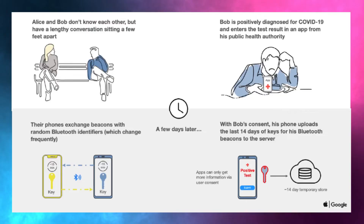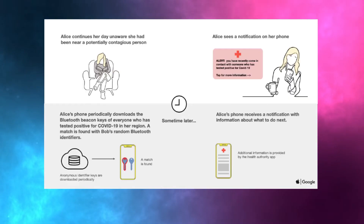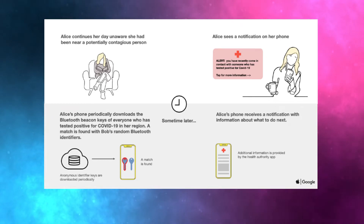Other devices will download the random keys from the health service at least once a day, and this data is processed on your device — there is no central matching. Matches found between keys will generate an exposure notification, which is also processed on your device. It's all happening on your device, which is why there was such debate about privacy in the NHS app.